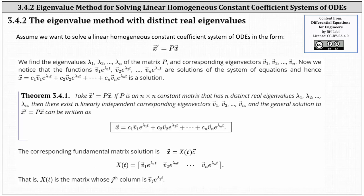To begin, we find the eigenvalues lambda sub 1 through lambda sub n of the matrix p and the corresponding eigenvectors v sub 1 through v sub n. The functions v sub 1 times e to the power of lambda sub 1 t, through v sub n times e to the power of lambda sub n t, are solutions of the system, and hence x equals c sub 1 times v sub 1 e to the lambda sub 1 t plus through plus c sub n times v sub n e to the lambda sub n t is a solution.